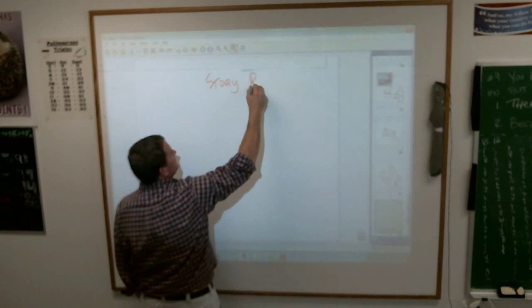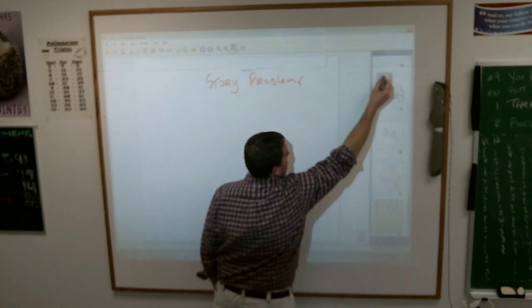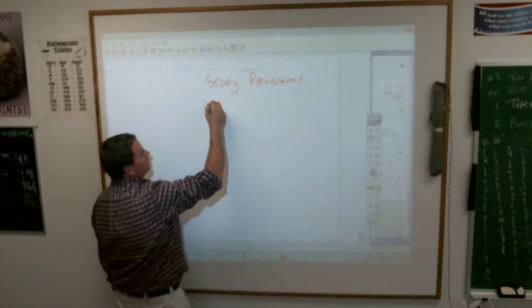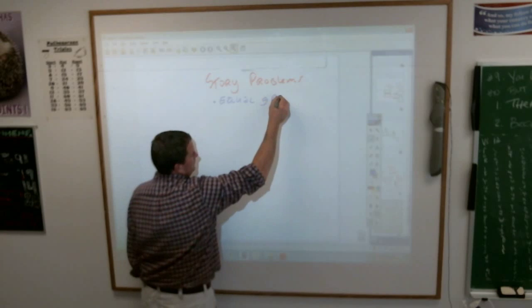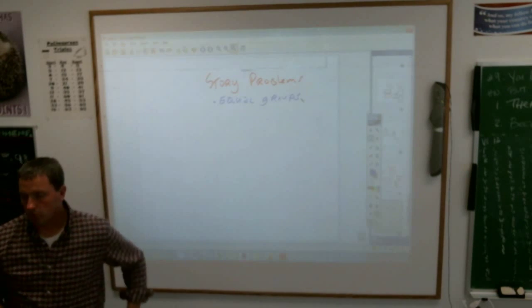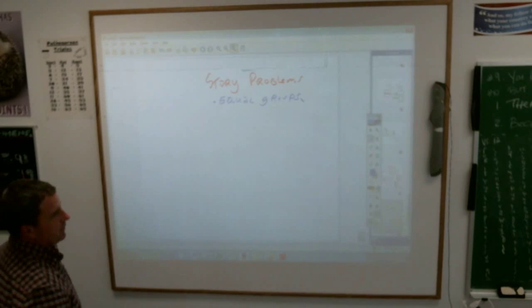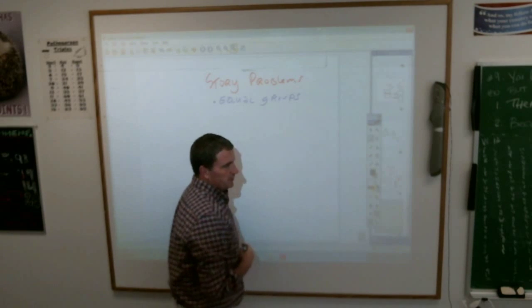These word problems are about equal groups. If you see an equal group problem, like I said, there were ten - a carton is a group of 12 eggs, and you have 15 cartons there, that's what type of problem you're probably going to be doing there.